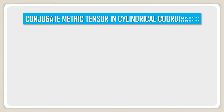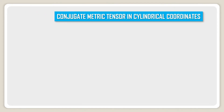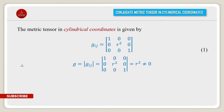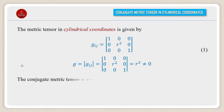Conjugate metric tensor in cylindrical coordinates. The metric tensor in cylindrical coordinates is given by g_ij equal to: 1, 0, 0; 0, r², 0; 0, 0, 1. Therefore g, the determinant of g_ij, equals the determinant of that matrix, which is equal to r², and is not equal to zero.